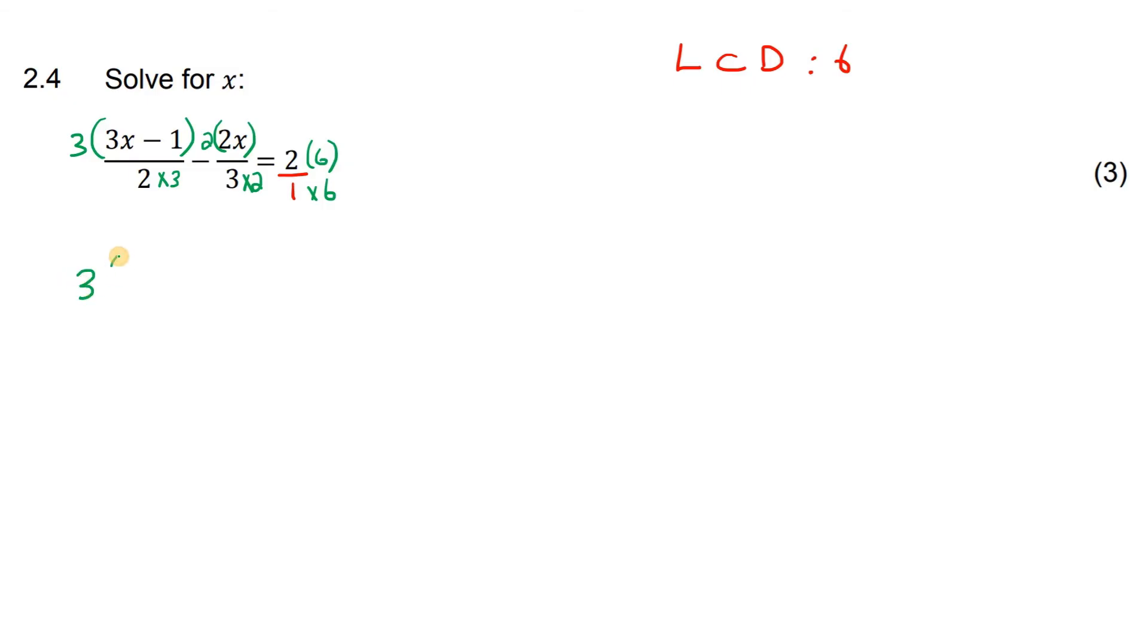So what we now have is this over 6 minus this over 6 equals this over 6. When we're working with an equation where we have an equal sign,